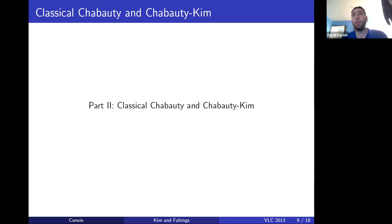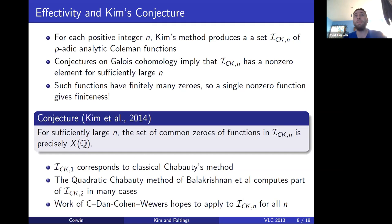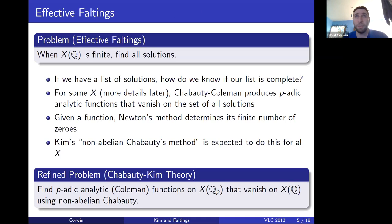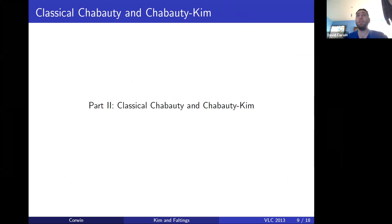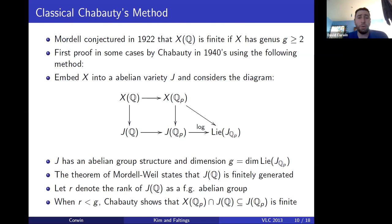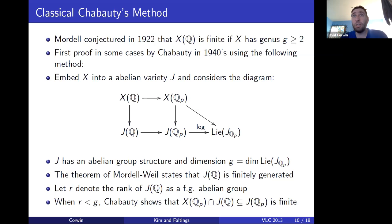Now I'm going to tell you where these p-adic analytic functions come from. First I'll go over classical Chabauty's method. Faltings' theorem was originally conjectured around 1922 — that X(Q) is finite if X is a smooth projective algebraic curve of genus at least 2. The first proof in a number of cases was by Chabauty using the following method. You embed X into an abelian variety J, generally its Jacobian, and you consider a diagram involving the rational points of X and J as well as the p-adic points of X and J.